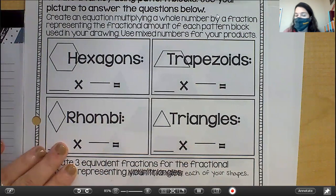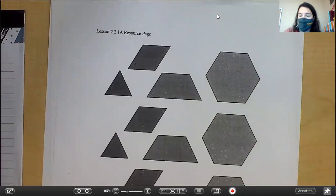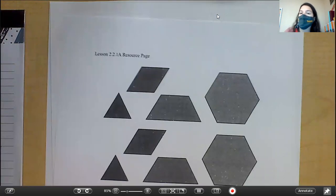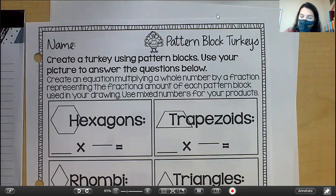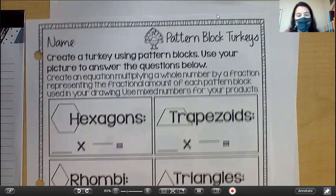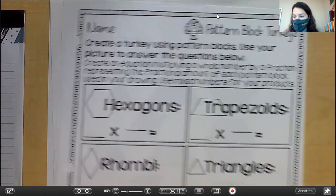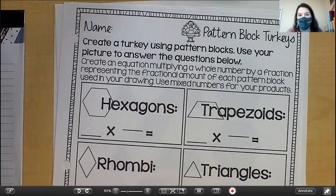What you need to do in the correct order: you'll cut out your shapes, you'll make your turkey, you'll trace them, you'll answer the questions, and then you can color if you would like. You do not have to color, but you should upload a picture of your paper and your turkey to Google Classroom. If you have any questions, let me know.